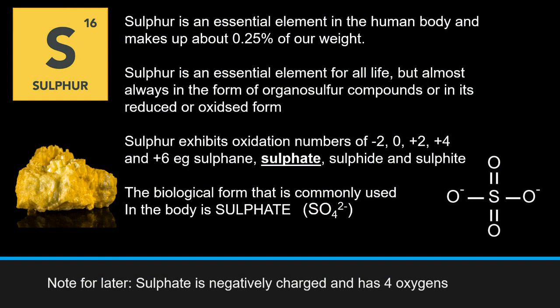Sulfur is found in abundance in the earth's crust and is an essential element in the human body, making up about 0.25% of our weight. Sulfur is essential for all life as it participates in many chemical reactions and helps to hold molecules together structurally — from small things like proteins all the way up to large structures like ligaments, tendons and connective tissue.